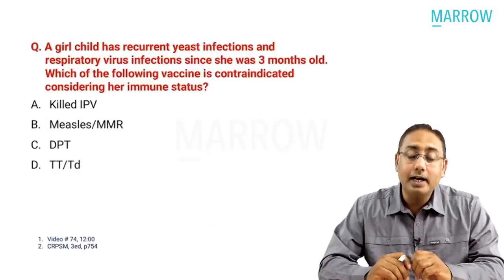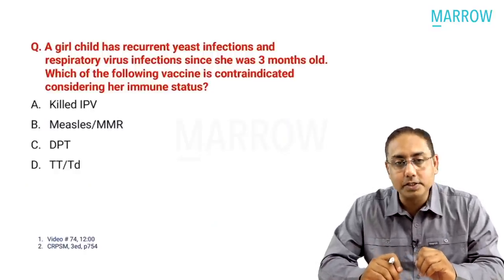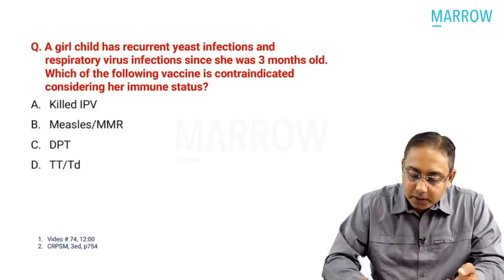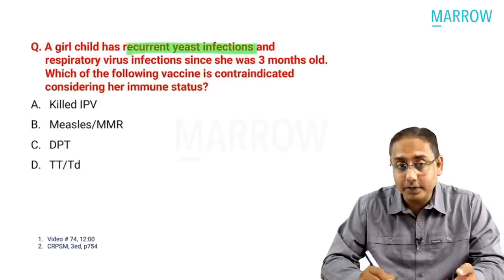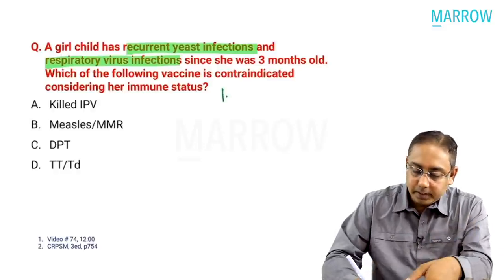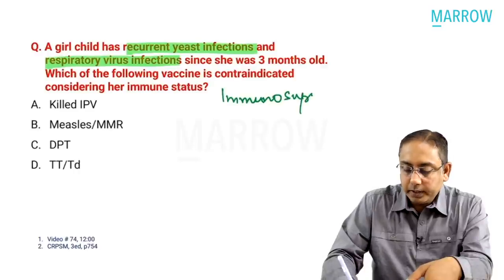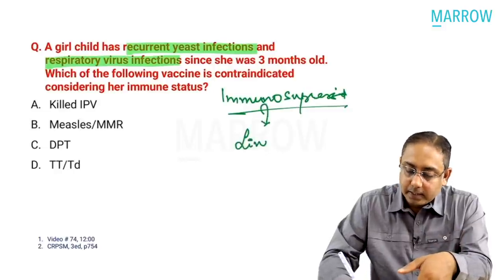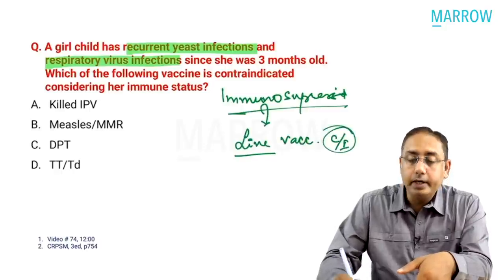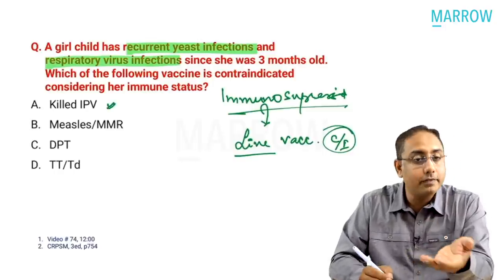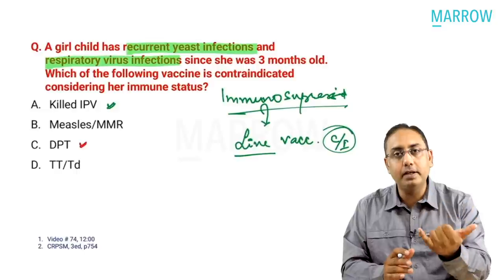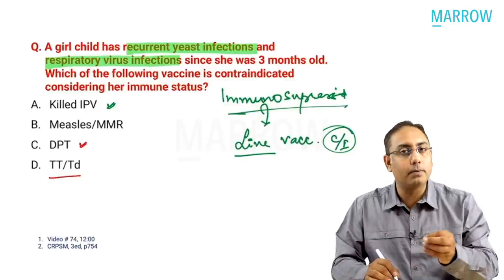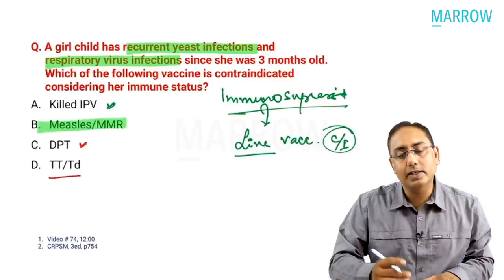Next question: a girl child had recurrent yeast infections and respiratory virus infections since three months of age. Which vaccine is contraindicated considering her immune status? Recurrent yeast and respiratory infections suggest immunosuppression. In immunocompromised patients, live vaccines are contraindicated. Killed IPV is not a live vaccine. DPT contains toxoids and killed components. TT/TD is again a killed vaccine. The only live vaccine among the options is the measles-rubella vaccine.